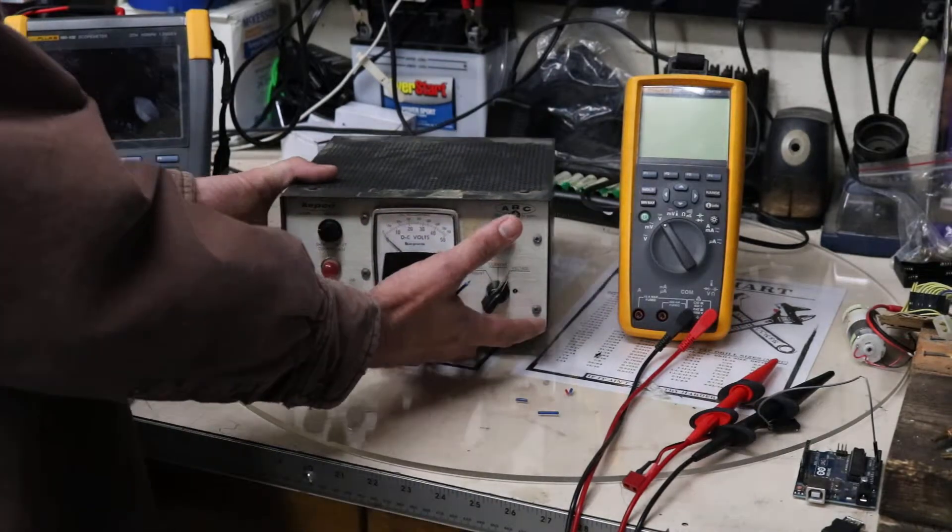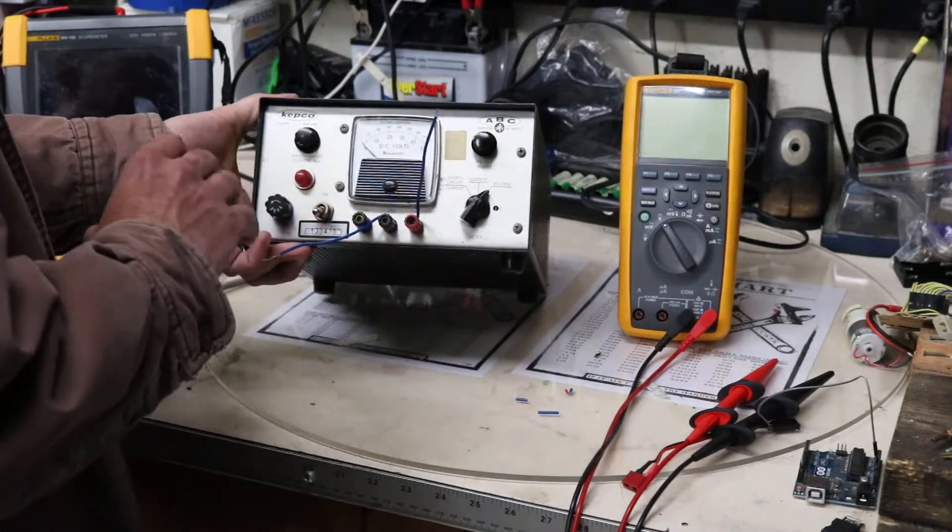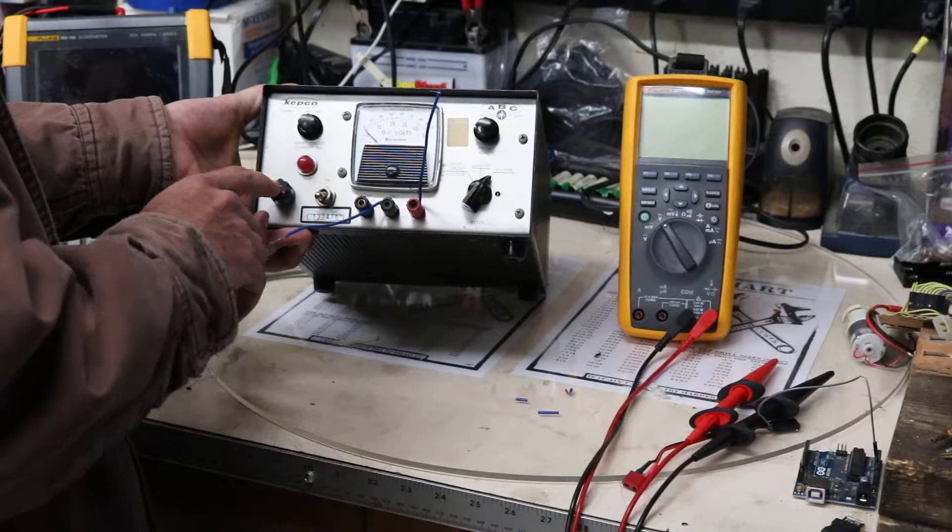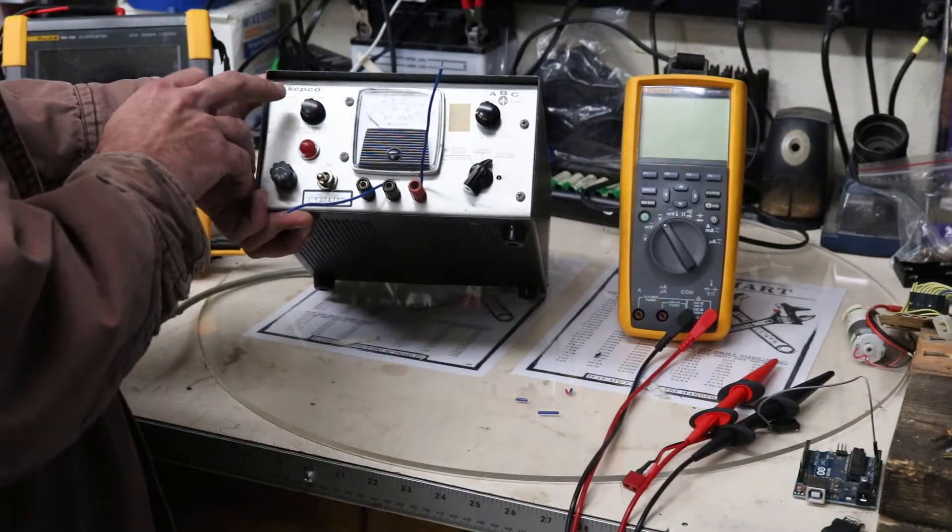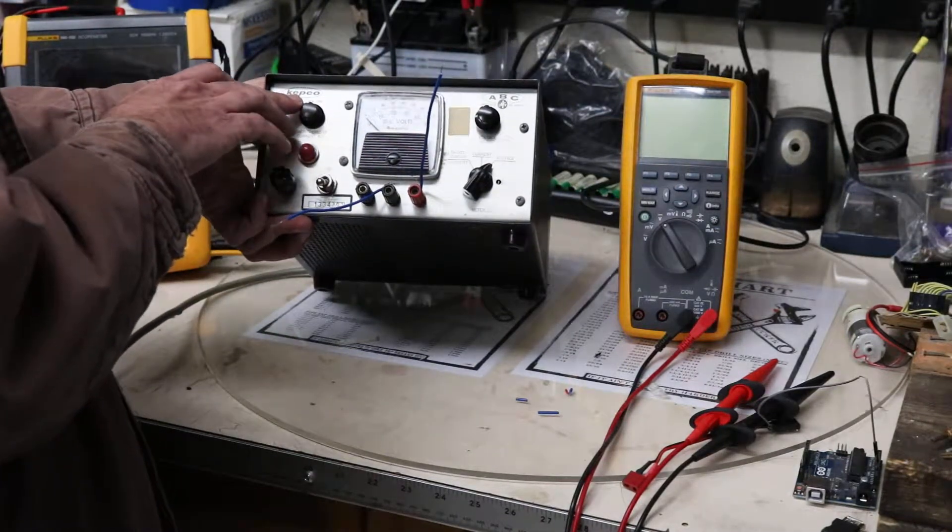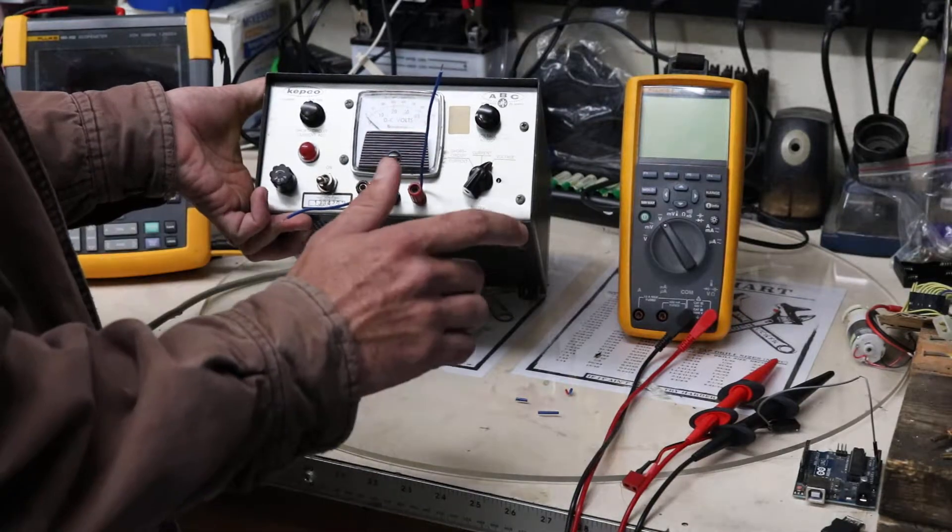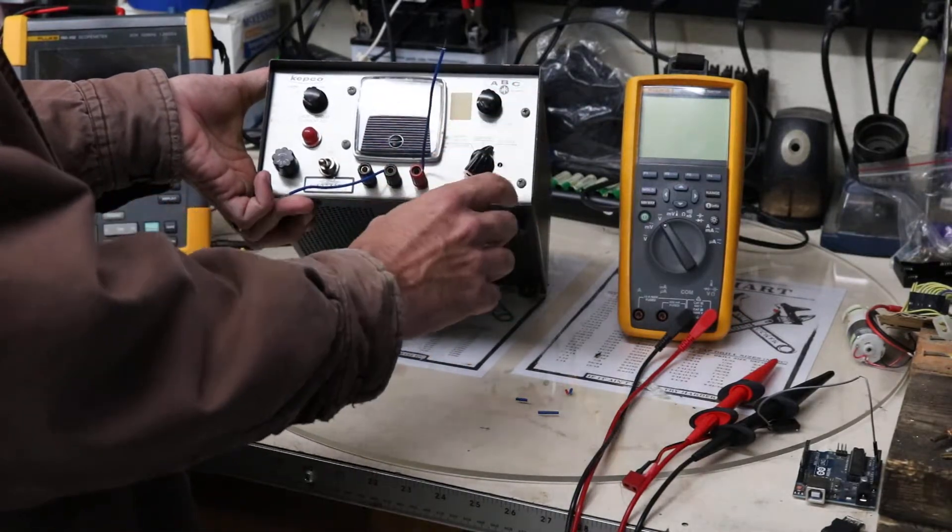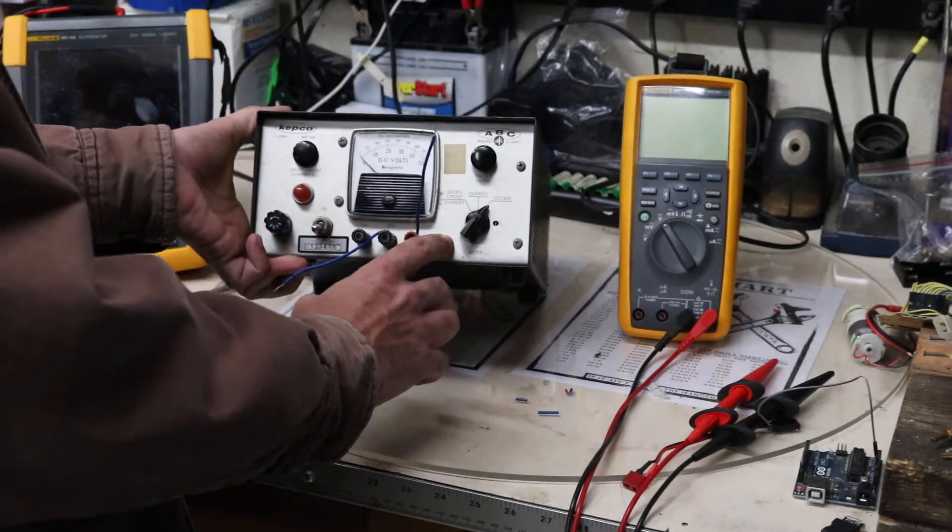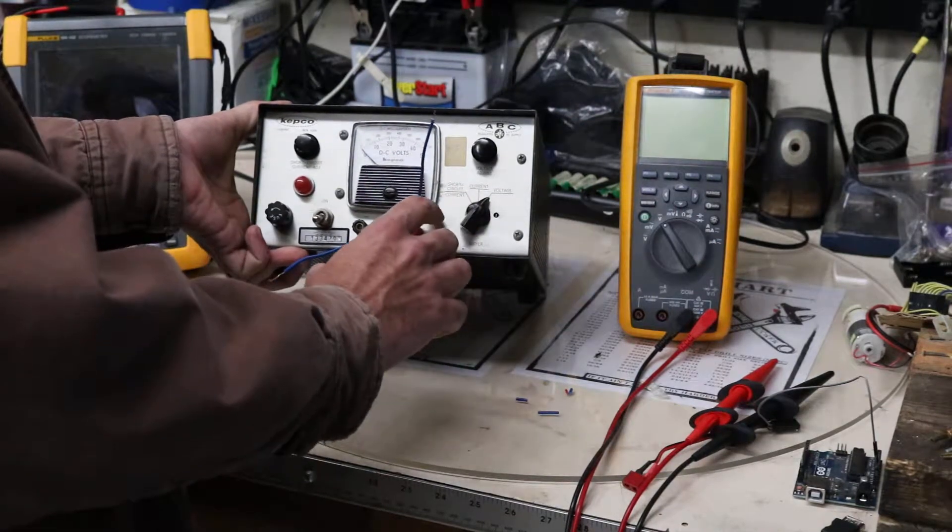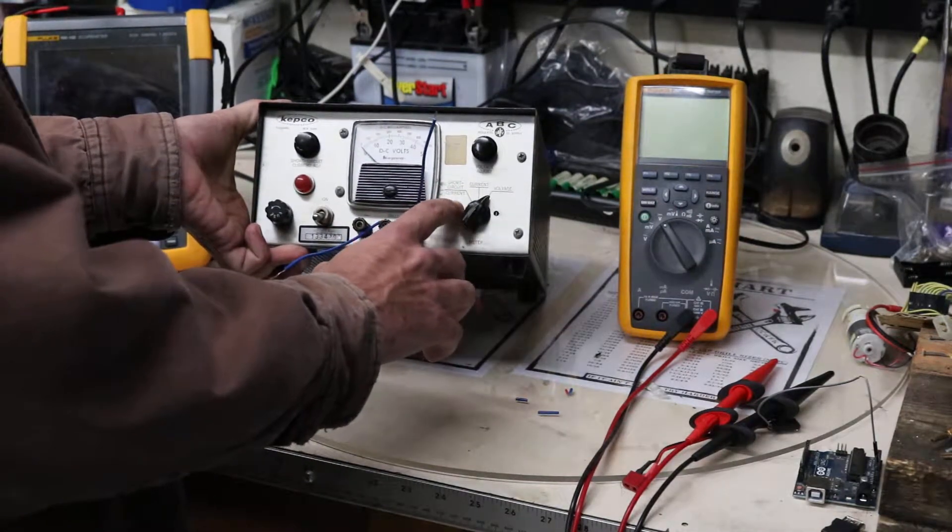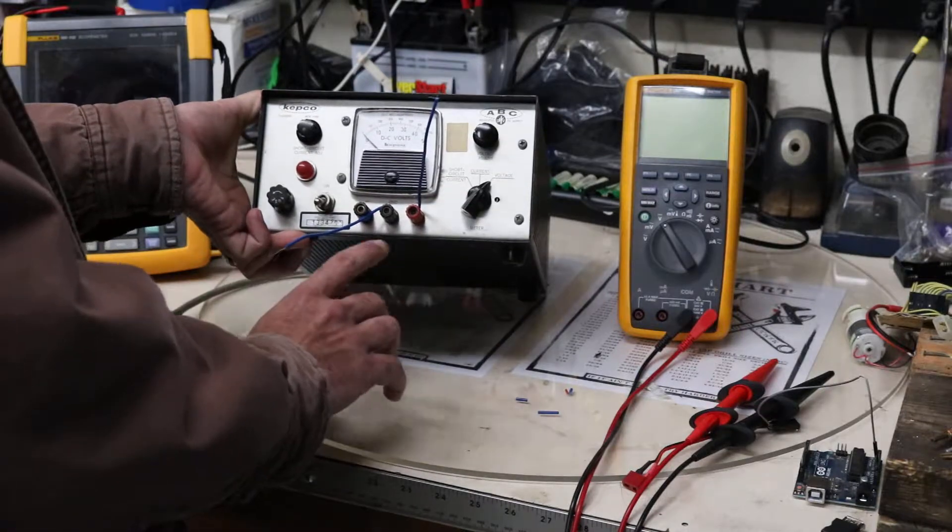This is a Kepco zero to 40 volt power supply. It's got a front side fuse here, slow blow fuse. It's got short circuit current adjustment, so this is where you adjust the output of the current. We have a voltage adjustment selector knob for voltage, current, and short circuit minus current, so that would be the shunt load.